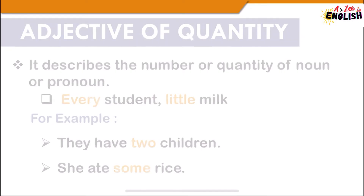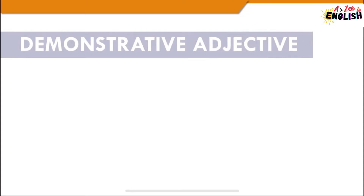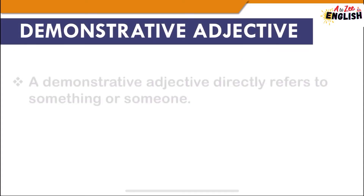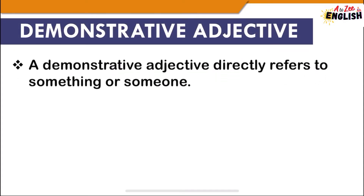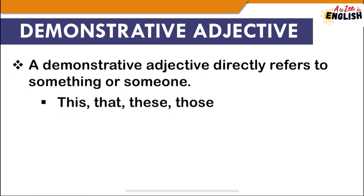Next is demonstrative adjective, which directly refers to something or someone. Examples include this, that, these, and those. In a sentence, the demonstrative adjective comes just before the noun or pronoun it modifies. It is totally different from a demonstrative pronoun, because a demonstrative pronoun works alone and does not precede a noun.